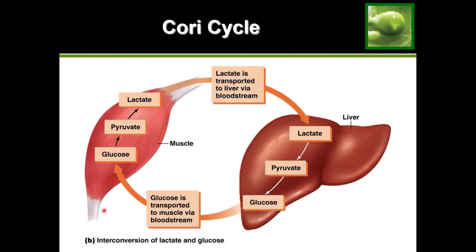To recap: the anaerobic pathway, or the Cori cycle, is only going to make 2 ATP. We make those 2 ATP in the glycolysis step. After that, pyruvate will accept the hydrogens and electrons from the coenzymes, creating lactate. We can't go any further at that point, so we want to reverse the process and regenerate glucose to go through glycolysis again and make another 2 ATP. To regenerate glucose, we send lactate to the liver, where it can be converted back into glucose to start glycolysis again.